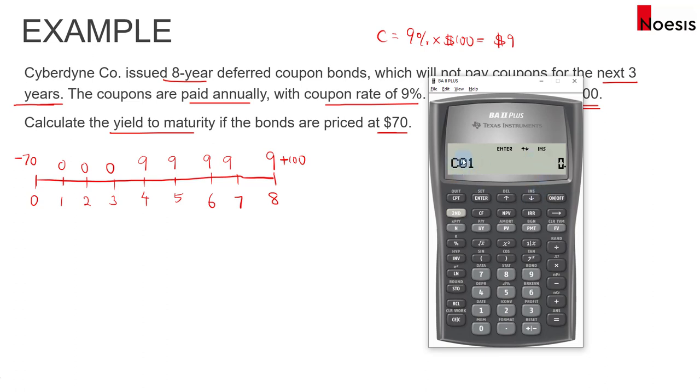For C01, the cash flow here will be 0. The frequency will be 3 since it's 0 for 3 years. So F01 is 3.